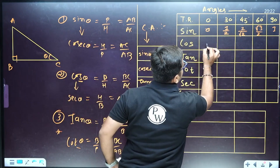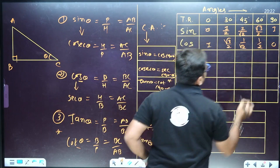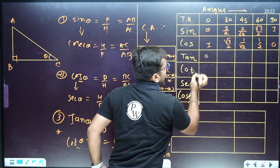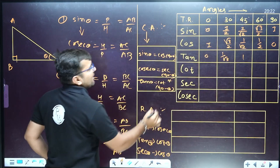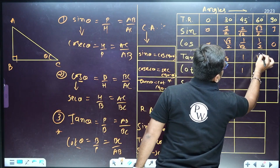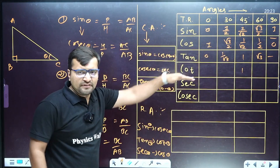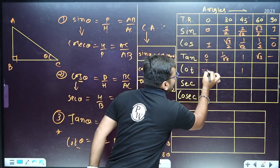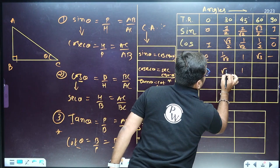For cos, it is complementary to sin, so just reverse the sine values: 1, √3/2, 1/√2, 1/2, and 0. For tan, it is the ratio of sin by cos: tan 0° is 0/1 = 0, tan 30° is (1/2)/(√3/2) = 1/√3, tan 45° is 1, tan 60° is √3, and tan 90° is undefined. For cot, it is the reciprocal of tan, so values are: undefined, √3, 1, 1/√3, and 0.